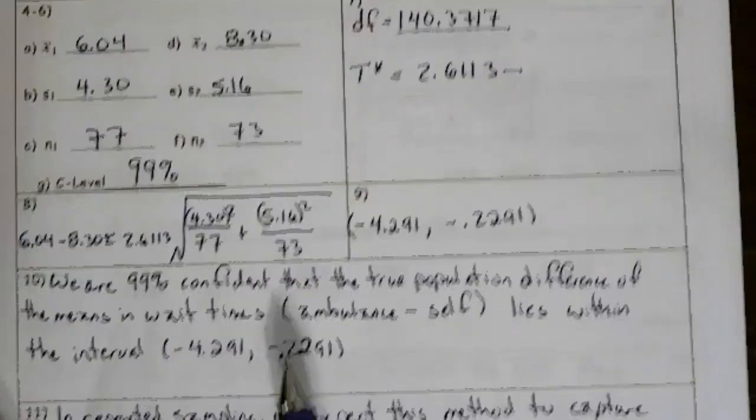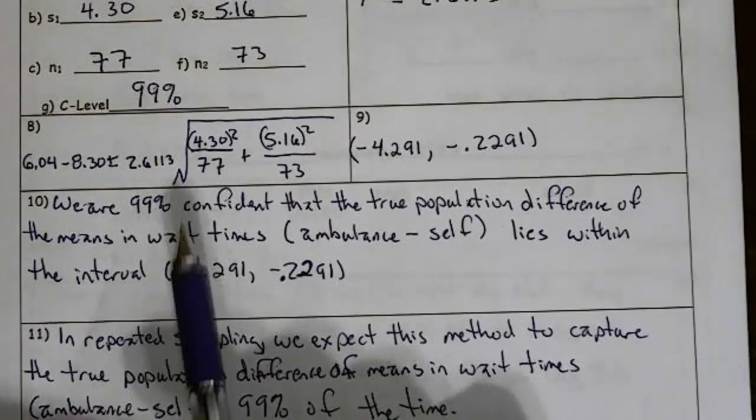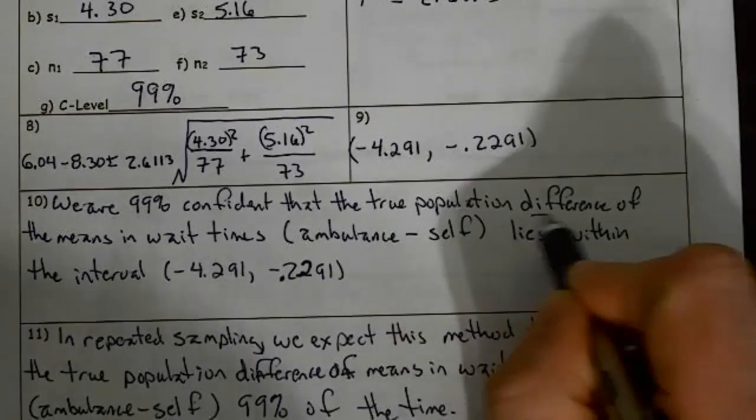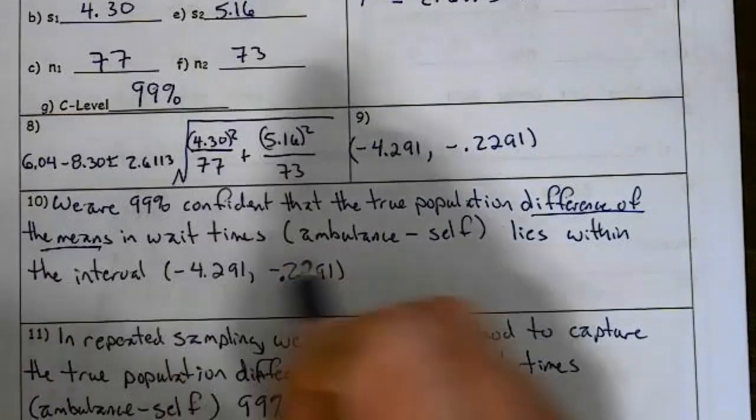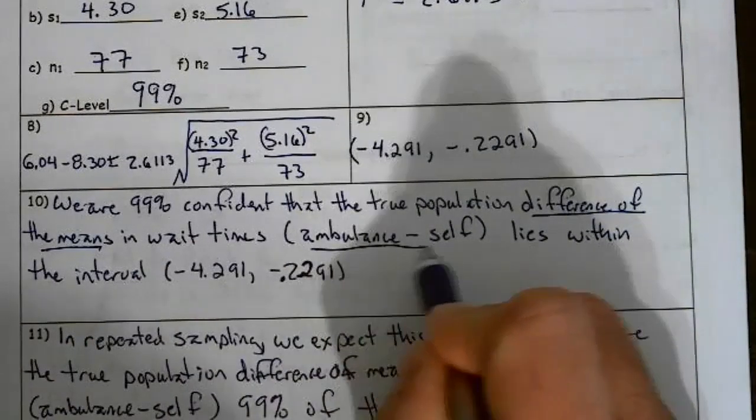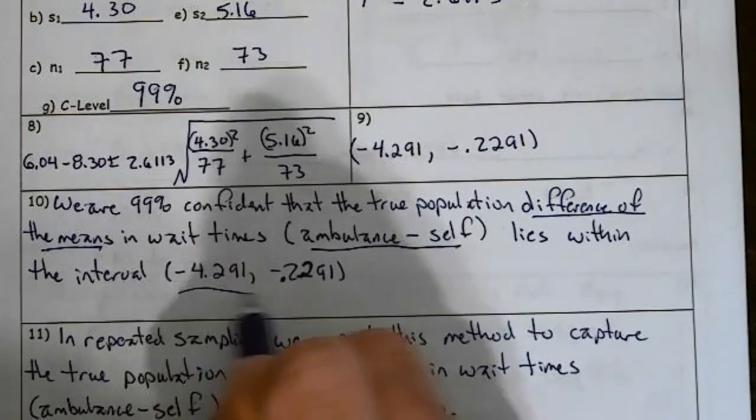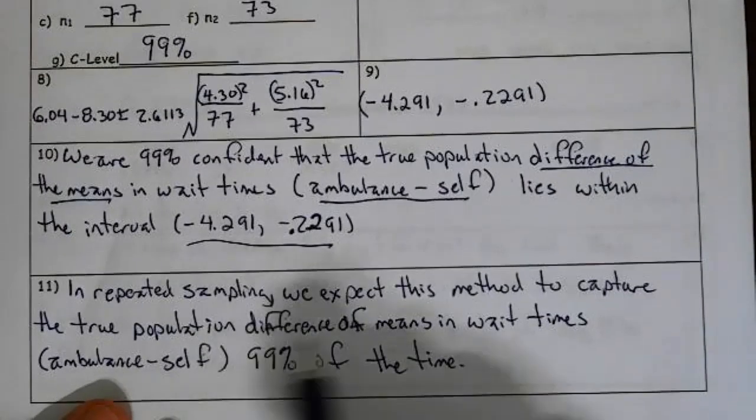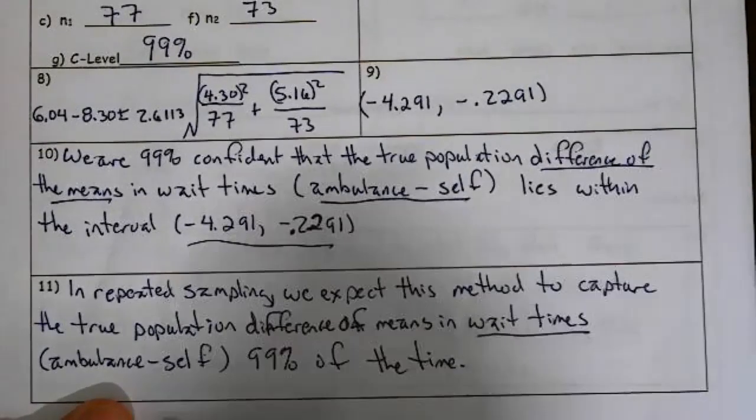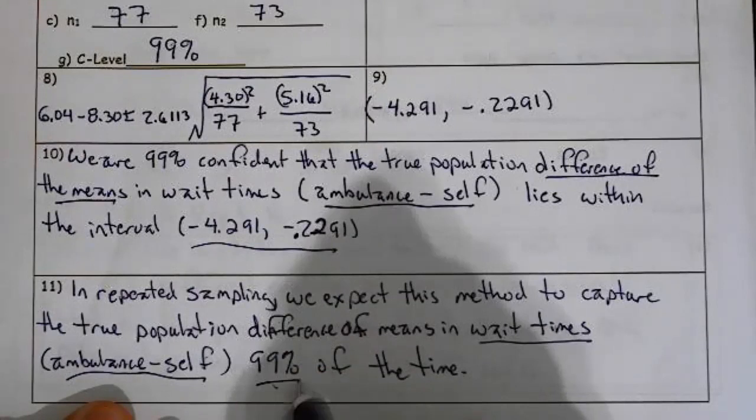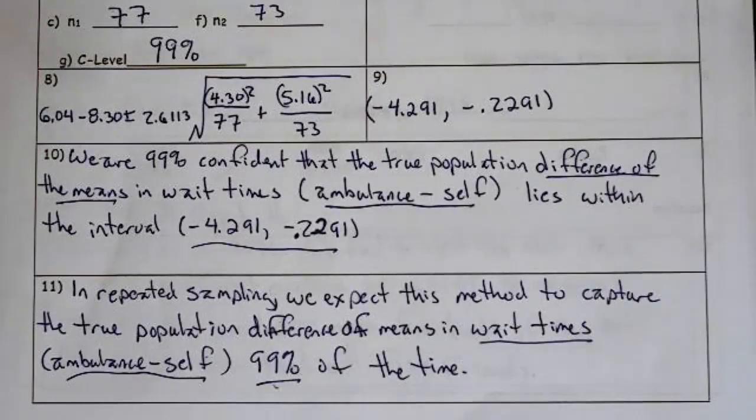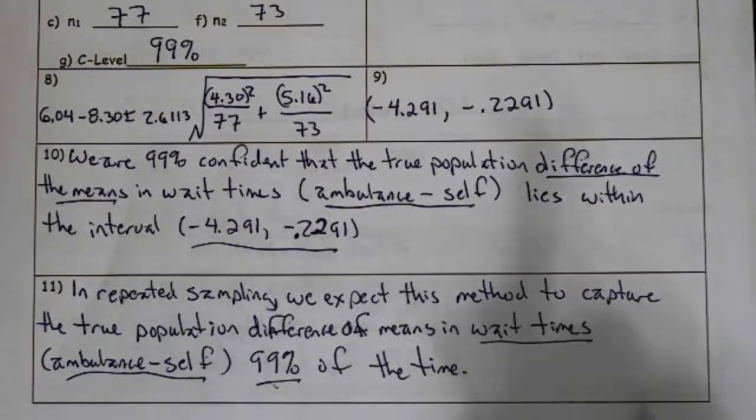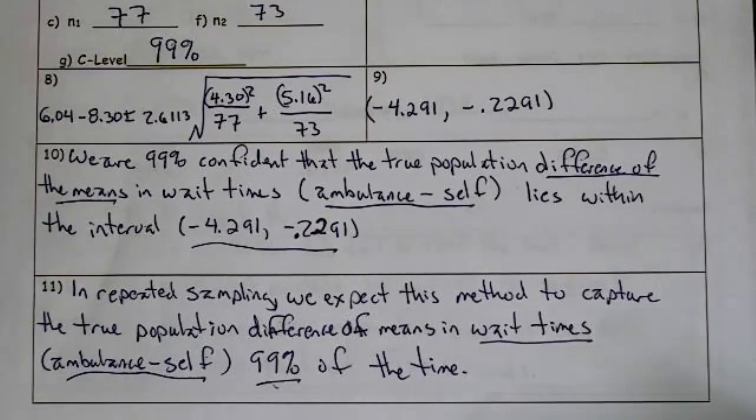So that takes care of that. So now we are on to our conclusion. And our conclusion is, we are 99% confident that the true population difference of means, so we need to make sure that we have difference of means, in wait times, ambulance minus self, I have to say which way it's subtracted, lies within our interval. In repeated sampling, we expect this method to capture the true population difference of means in wait times, ambulance minus self, 99% of the time. Now, when we're doing the confidence interval, we have to have the difference of means. When we're doing the hypothesis test, which we'll do just in a moment, you'll see that we don't need to have that.